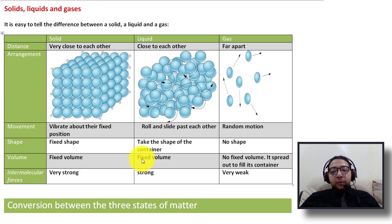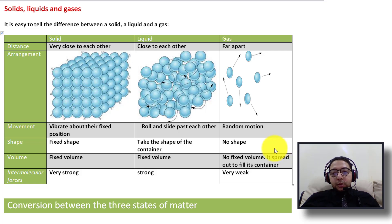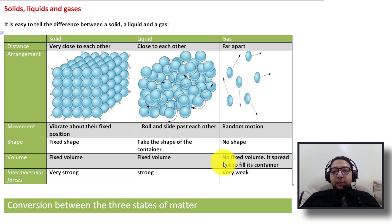For gases, there is no fixed volume because we can press the particles together to take a smaller space. Gas spreads out to fill its container. Compressibility for gases is very high because we can push the particles together due to the large spaces between them.